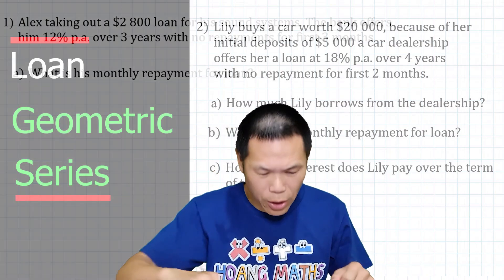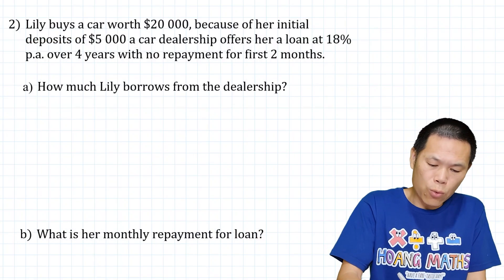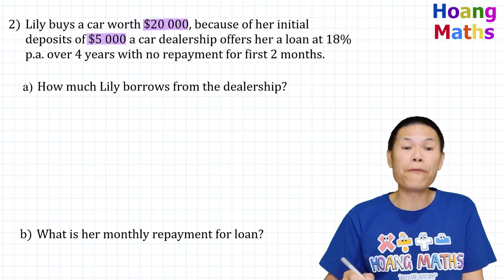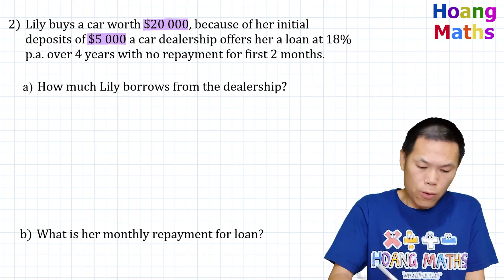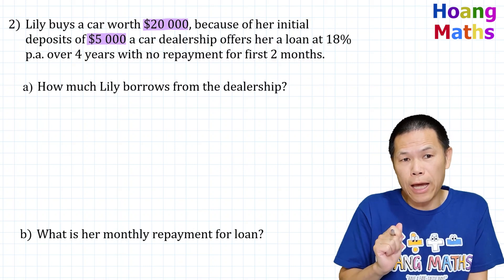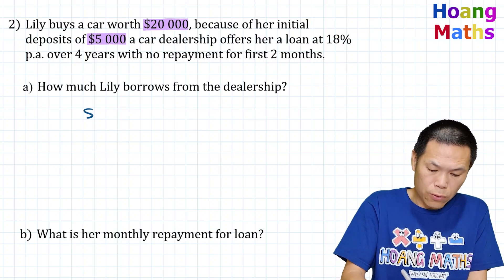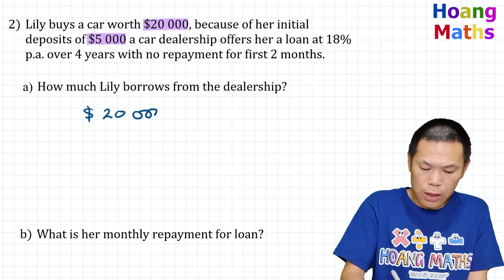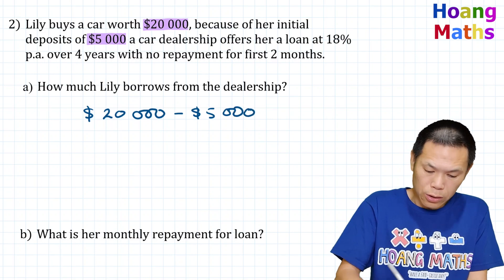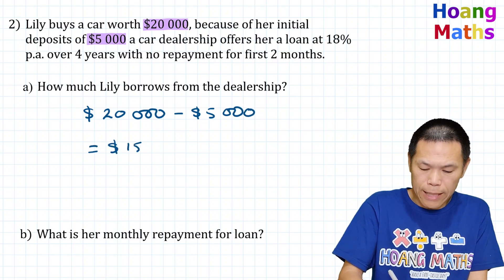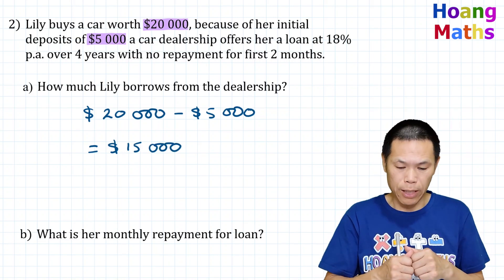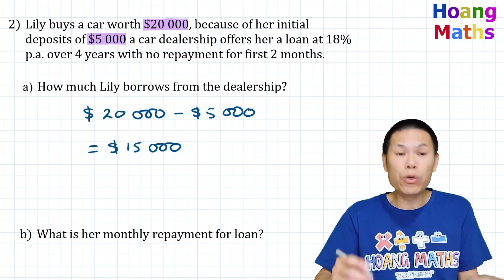We know the car is worth twenty thousand dollars and she makes a deposit of five thousand dollars. Therefore Lily only borrows the difference between twenty thousand and five thousand dollars. So twenty thousand minus five thousand gives us fifteen thousand dollars — that is how much Lily owes the dealership.